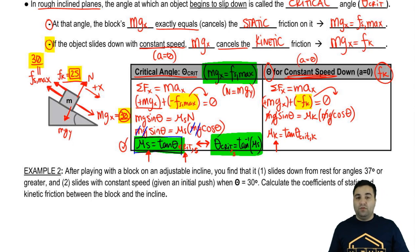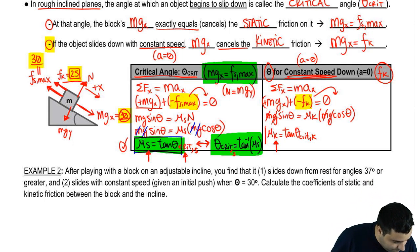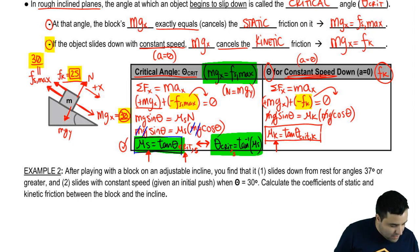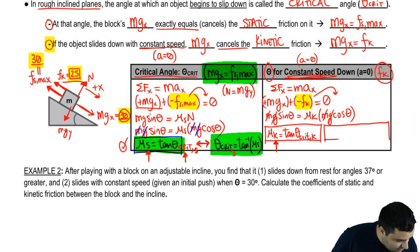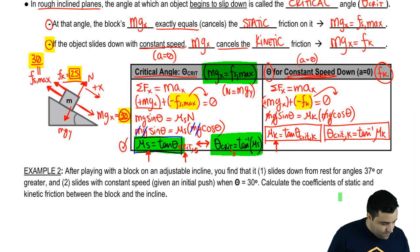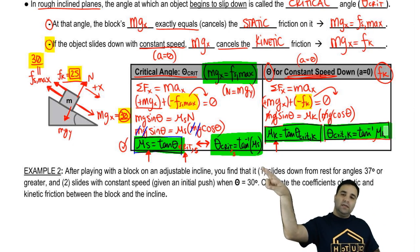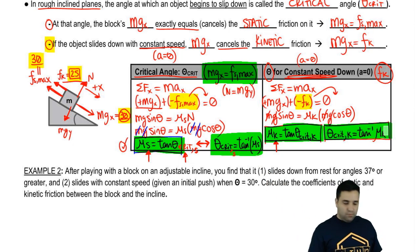You can think of these as the critical angle for static and the critical angle for kinetic. Using arc-tangent, theta-critical-kinetic equals the arc-tangent of the kinetic coefficient of friction. Those are the two special angles: one where you begin to slide, and one where you slide at constant speed.